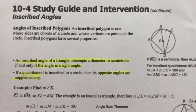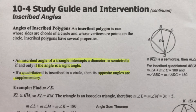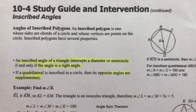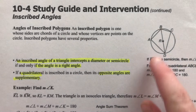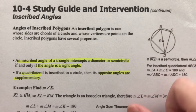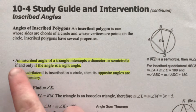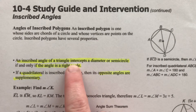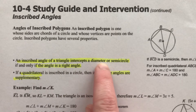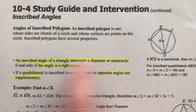This video is reviewing part two of 10-4, all about inscribed angles. In the last video, part one of this lesson, we went over the rules of inscribed angles and intercepted arcs created from those angles. So now we're going to apply those rules to quadrilaterals in a circle. The first thing it says here is: an inscribed angle of a triangle intercepts a diameter or semicircle if and only if the angle is a right angle.